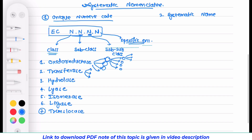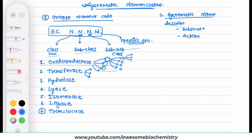Regarding this, we will see one example shortly so that everything becomes clear. But before that, let us look at the systematic name suggested by this nomenclature. The Enzyme Commission suggested that the systematic name should describe at least the name of the substrate and the action being performed, and if possible, other characteristics of the enzyme.